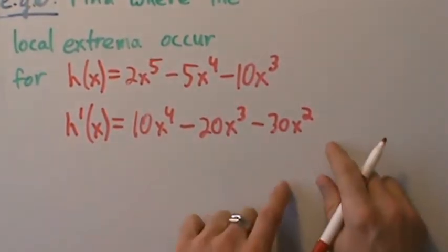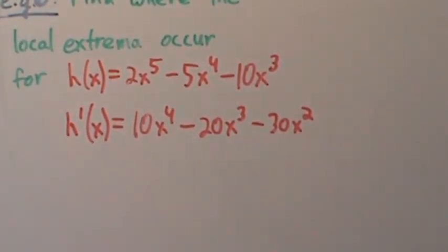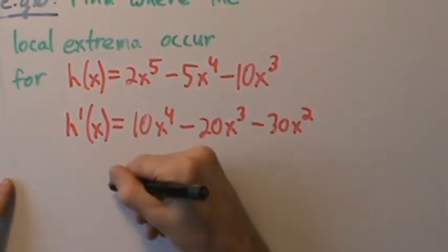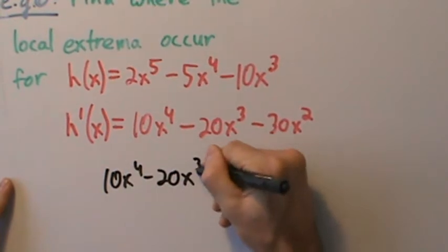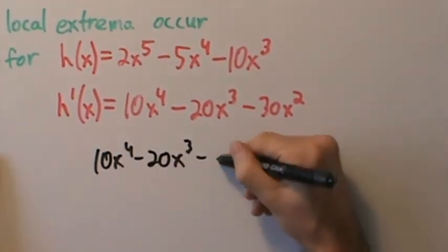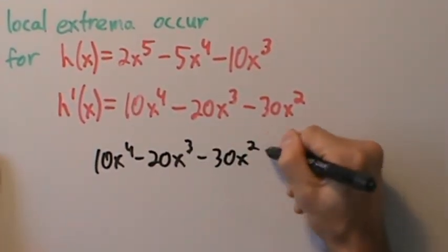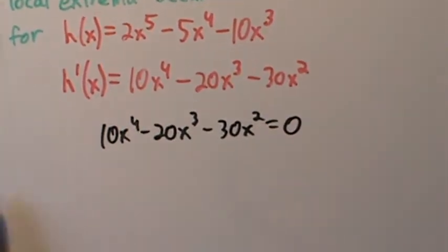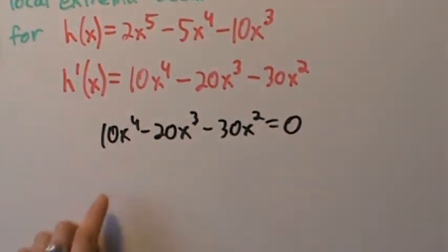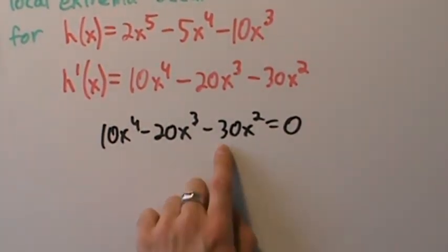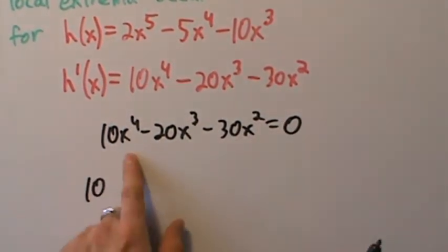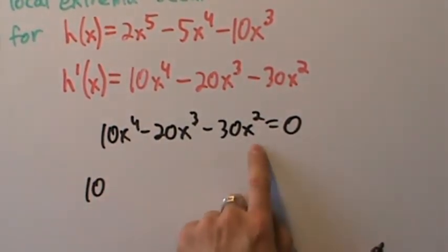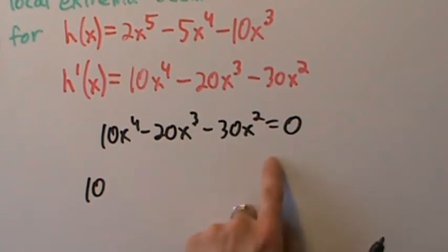We want to set this equal to zero and solve for x. So 10x to the fourth minus 20x cubed minus 30x squared equals zero. Are there any common factors? We have 10, 20, and 30, so we can pull out a common factor of 10. And looking at x to the fourth, x to the third, and x squared, we can pull out a common factor of x squared.